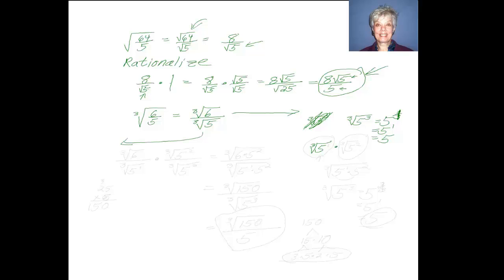I could do it if I were to multiply by the cube root of 5 squared. Because the cube root of 5 is really the cube root of 5 to the 1 power. If I multiply the cube root of 5 to the 1 times the cube root of 5 to the 2, I'll have the cube root of 5 to the 1 power times 5 to the 2 power. When I multiply like bases, I add the exponents, so this will be the cube root of 5 to the third, which equals 5. Bingo! That's the way I'm going to do it.